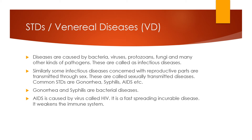AIDS is related to the immune system. The immune system is what gives us defense. When we talk of COVID-19, everyone has heard of immunity — those with strong immunity are not attacked easily. The HIV virus attacks the immune system, weakening it. As a result, any pathogen that enters the body will multiply very fast because the body cannot resist it.